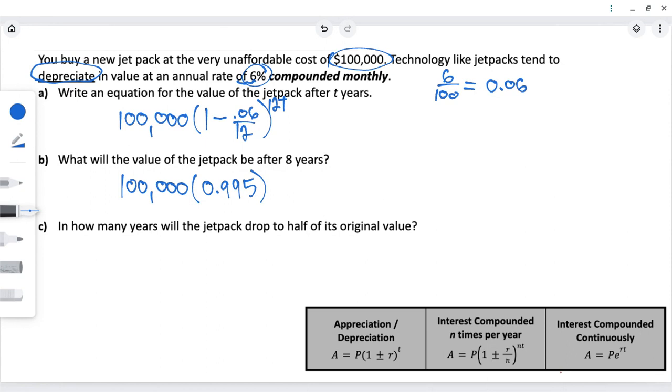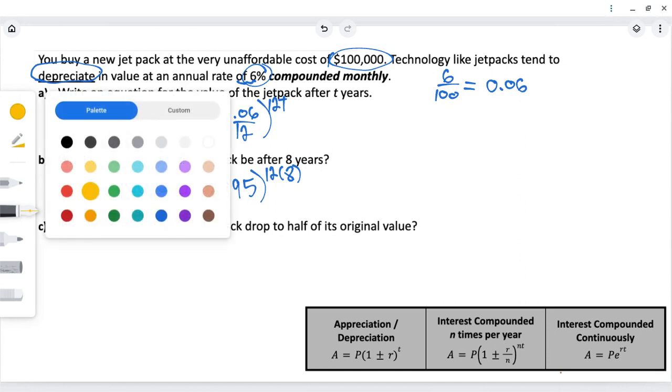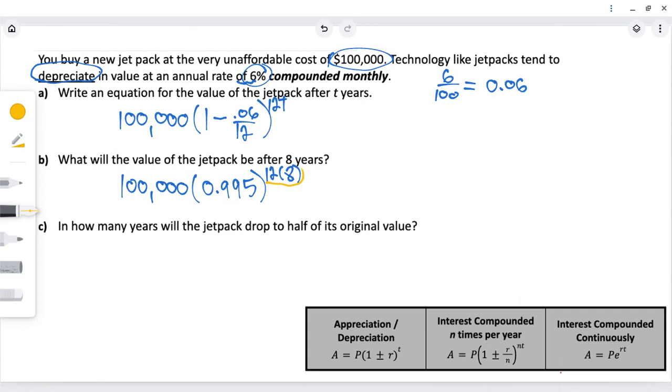In part B here, what will the value of the jetpack be after eight years? T for time is always years. So, we're going to put eight right in there. To make this easier, when you type it into your calculator, I would recommend figuring out what the exponent is equal to, like do 12 times 8, and it's 96, and then just type it in as 96. The answer to this one should be dollars, because we're talking about value, and we always round to two decimals when we're doing dollars and cents.